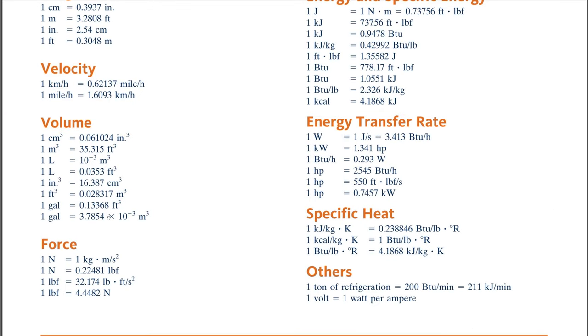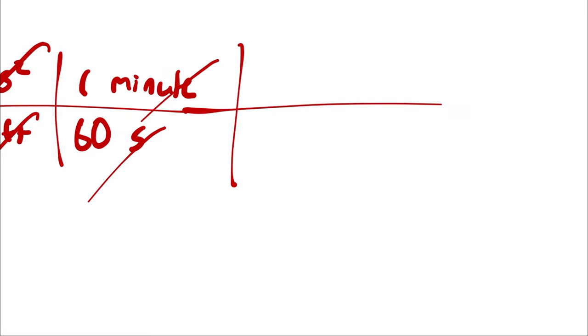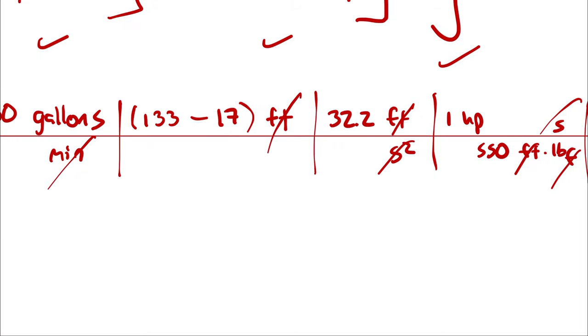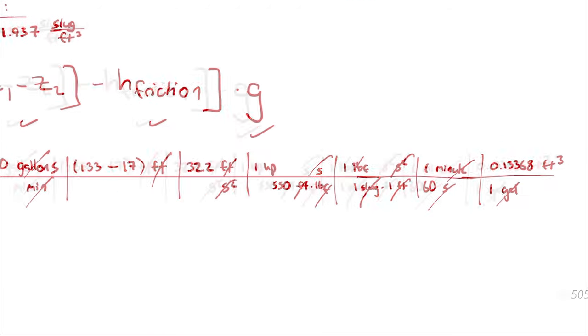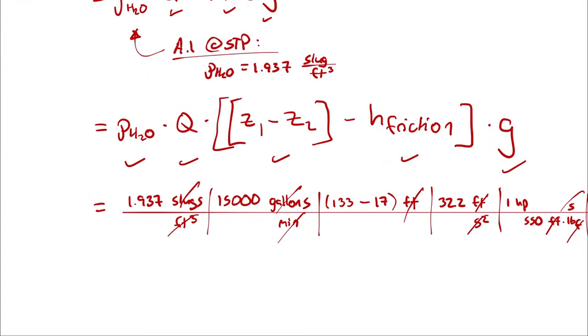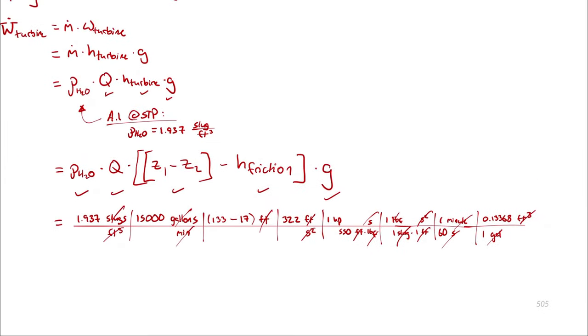And one gallon is a number of cubic feet that is conveniently available on this sheet somewhere. One gallon is 0.13368 cubic feet and then gallons cancel gallons and cubic feet cancel cubic feet leaving me with horsepower.